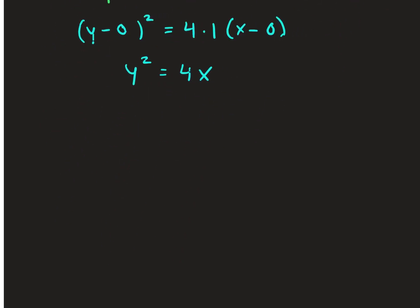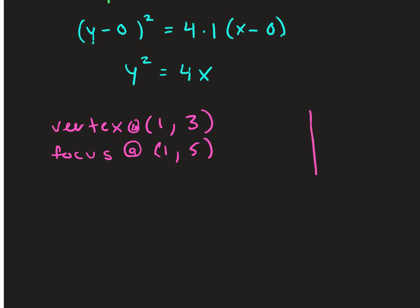One more example: if our vertex is at (1, 3) and our focus is at (1, 5). We draw it — vertex at (1, 3) means go right 1, up 3. Focus at (1, 5) means right 1, up 5. The focus is above the vertex, so the parabola opens up.